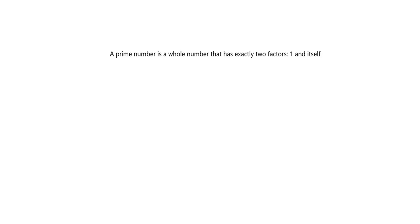Prime numbers are basically the basic building blocks of the number system because they're the numbers that can't be broken down any further. You can't divide anything into a prime number without leaving a remainder, except one, which goes into anything, and the number itself.